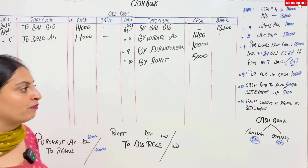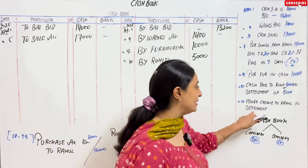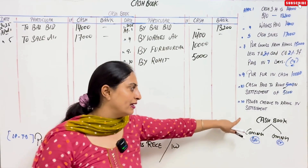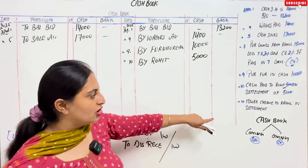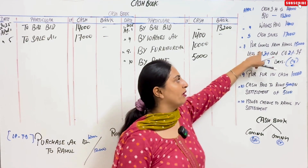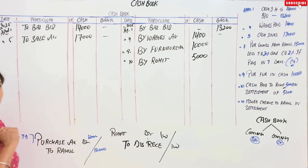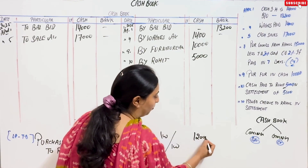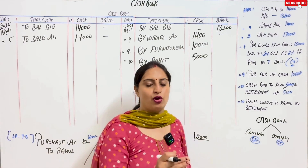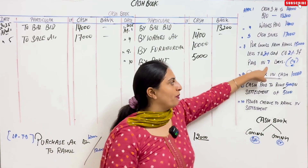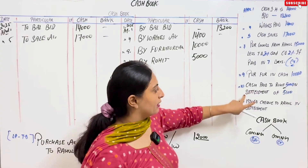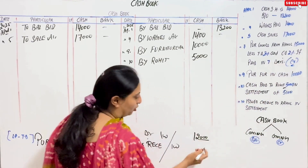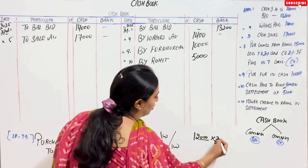Next entry: issued cheque to Rahul in settlement. Settlement means you paid him. Since we bought from Rahul on April 7, the amount after trade discount is ₹12,000. If you pay before April 14, you get a 2% cash discount. We paid on April 10 — within 7 days — so discount = 2% of ₹12,000 = ₹240. Therefore, you pay ₹12,000 − ₹240 = ₹11,760 by cheque.